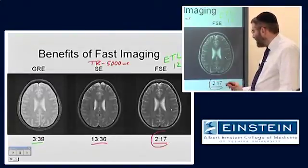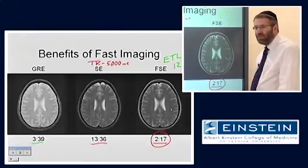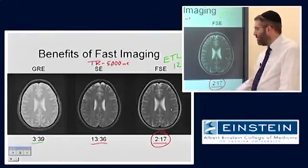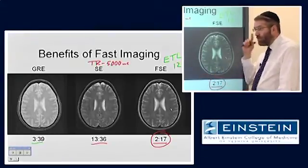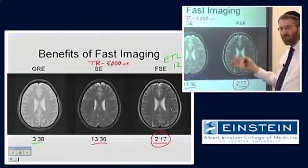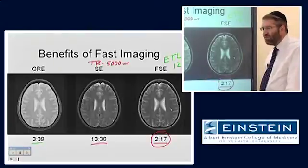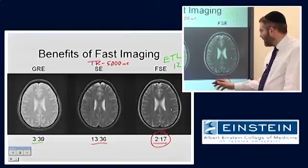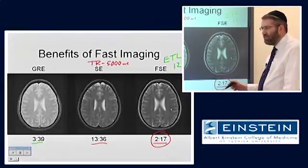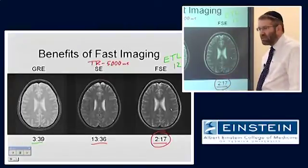One of the bonuses of being able to image so quickly is that we can use a long TR without worrying about the exam taking forever. In the old days, TRs would hover around 2,000 milliseconds and image quality would suffer significantly. With this kind of acceleration, it became routine to image with TRs in the 5, 6, or 7 second range.